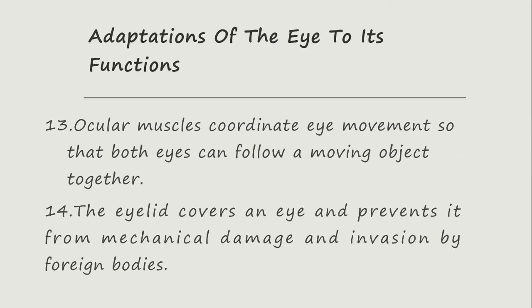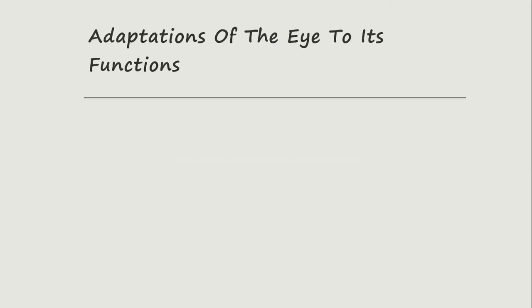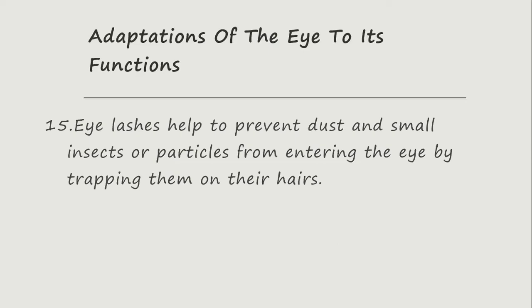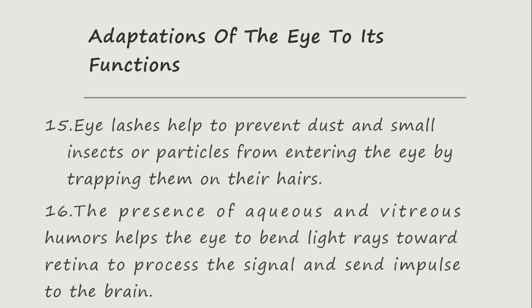The eyelid covers the eye and prevents it from mechanical damage and invasion by foreign bodies. The eyelashes help to prevent dust and small insects or particles from entering the eye by trapping them. The aqueous and vitreous humour help the eye to bend the light rays toward the retina to process the signal and send impulses to the brain.